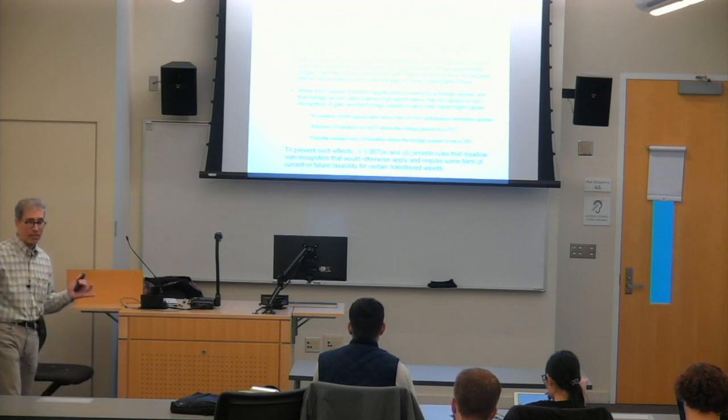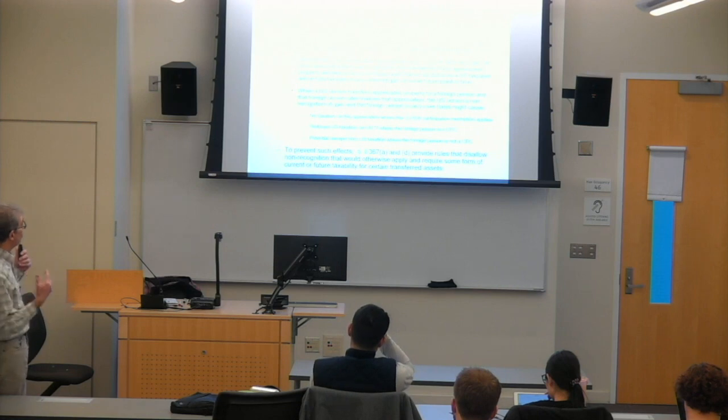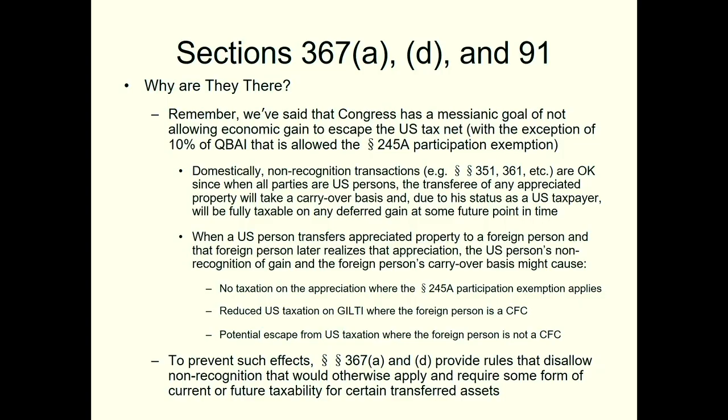Underlying all of this is what I refer to as Congress's messianic goal. And what is that goal? Not allowing any economic gain to escape U.S. taxation, except for that 10% of QBI. To force recognition by U.S. taxpayers of any gain which economically occurs while that U.S. person owns whatever the asset is.